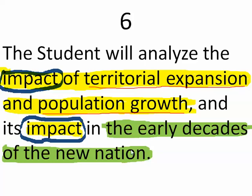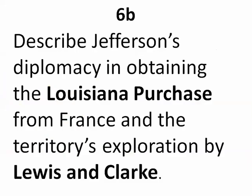We're going to talk about Standard 6B, the Louisiana Purchase. But before we do, let's look at the overall picture. Standard 6 says the student will analyze the impact of territorial expansion, population growth, and its impact on the early decades of the new nation. So what we're looking at here with the Louisiana Purchase is the territorial expansion and that impact on the early decades of the new nation. Standard 6B says: describe Jefferson's diplomacy in obtaining the Louisiana Purchase from France and the territory's exploration by Lewis and Clark.